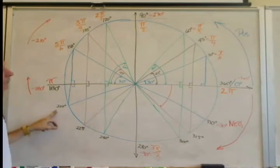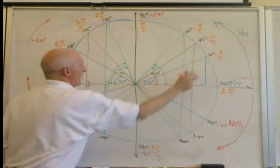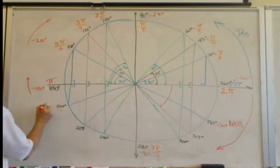210 degrees, well, that's 7 of these, so that's 7 pi over 6.